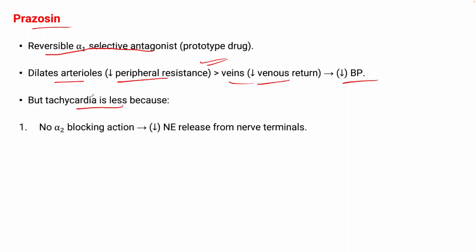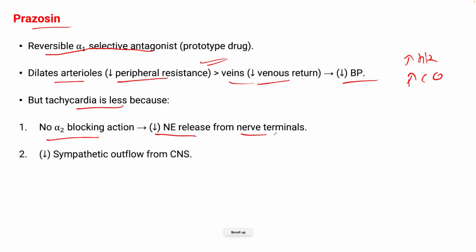Tachycardia is less with prazosin. The reason is there is no alpha-2 blocking action — because blocking alpha-2 increases the heart rate and cardiac output — hence there is decreased noradrenaline release from the nerve terminal. As a result, there is decreased sympathetic outflow from the CNS, and also there is a decrease in cardiac preload.